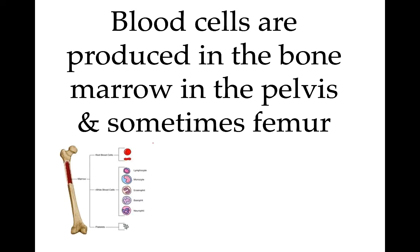Blood cells are produced in the bone marrow in the pelvis and sometimes in the upper part of the femur. Your other bones do have bone marrow but it's not active. It is active when you are developing in your mother's womb, but as you get closer to birth, more and more of the bone marrow in the small bones shuts down. By the time you're an adult, the only active bone marrow is in your pelvis and sometimes the upper femur.